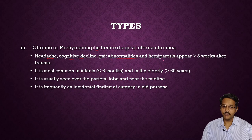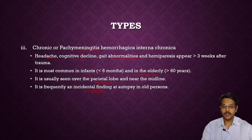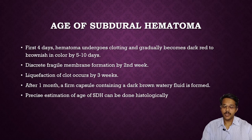Chronic subdural hemorrhage, also known as pachymeningitis hemorrhagica interna chronica, presents with headache, cognitive decline, gait abnormalities, and hemiparesis occurring more than three weeks after trauma. It is most common in infants less than six months of age and in the elderly above 60 years. It is usually seen over the parietal region near the midline and is frequently an incidental finding in older persons. It can be diagnosed by CT scan, appearing as a crescent-shaped opacity.